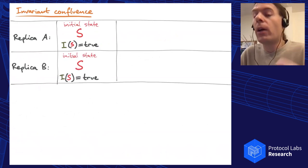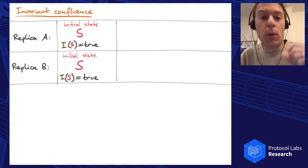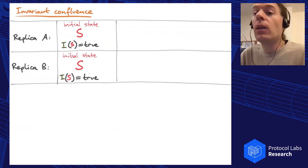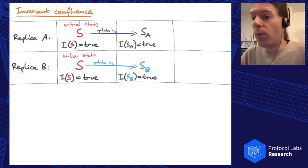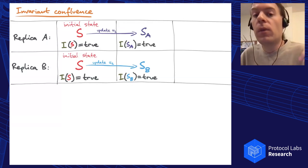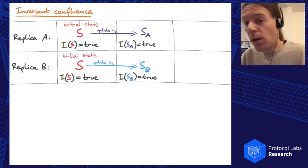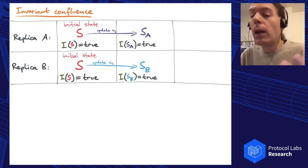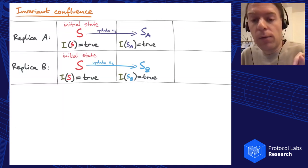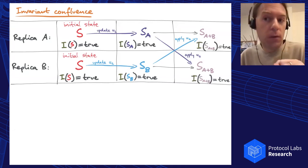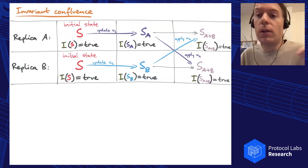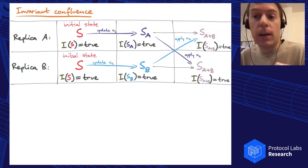We can now reason about whether an invariant is confluent or not. Imagine you have two replicas, A and B. They're both initially in state S and invariant I is satisfied for both. Replica A performs update U1 and moves into state SA, and we assume SA still satisfies the invariant. Moreover, concurrently, replica B applies some different update U2, and we assume in state SB the invariant is also satisfied. Under all those assumptions, the two replicas now exchange their updates and both merge them into some state. Based on the convergence property earlier, we know this merge is always possible. If the invariant is still satisfied in this merged state, then we say that updates U1 and U2 are invariant confluent with regard to invariant I.